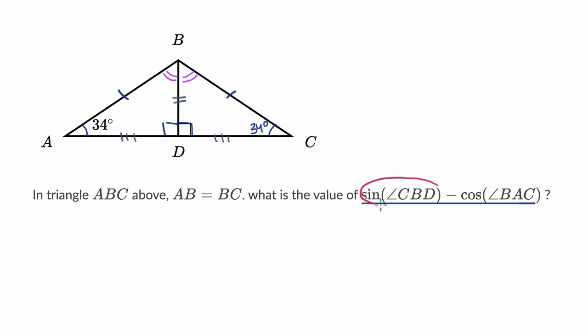So now let's think about sine of angle CBD. CBD, we're talking about this angle right over here. The sine is opposite over hypotenuse. Opposite is DC. Hypotenuse is opposite the 90 degree side, so that's BC.